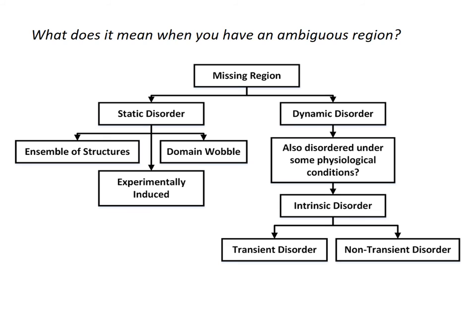So the question we're asking is: what does this ambiguity mean? Is the missing region an experimental artifact? Is it caused by static disorder, which can be caused by the movement of a large structured region by a small hinge, or by an ensemble of structures? Or does an ambiguous region still indicate protein intrinsic disorder — and if so, how do we make sense of the variability between crystal structures?